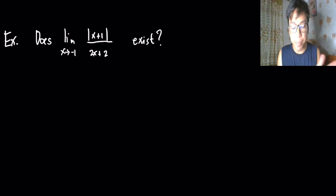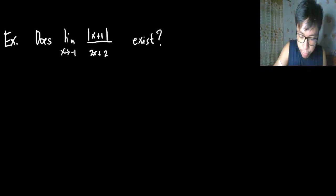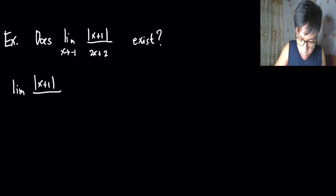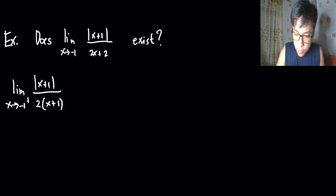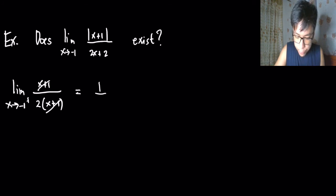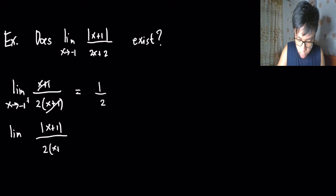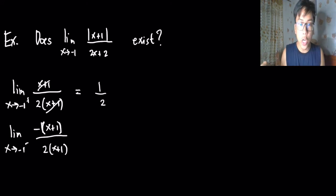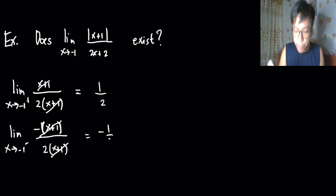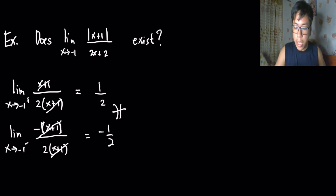Another example: does the limit of |x+1| / (2x+2) as x approaches -1 exist? From the right, |x+1| = x+1, so (x+1)/(2(x+1)) simplifies to 1/2. From the left, |x+1| = -(x+1), so the expression becomes -(x+1)/(2(x+1)) = -1/2. Both limits exist, but they are not equal, so the limit does not exist.